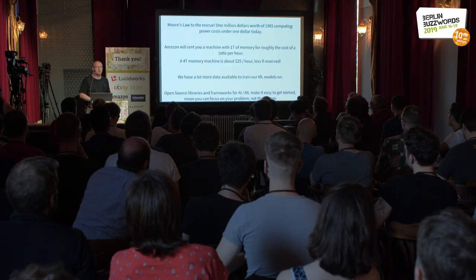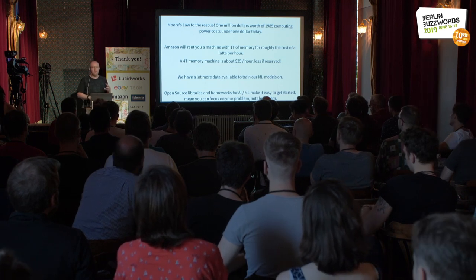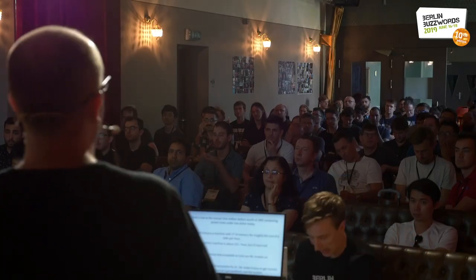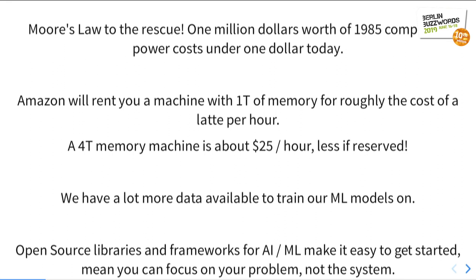You can rent a four-terabyte memory machine for 25 bucks an hour, so a whole bunch of problems that used to need more computers than would fit in this room are now 25 bucks an hour. We've also got a lot more data available to train our models on — we've now got terabytes and petabytes of records. And the other big thing is all the open source libraries and frameworks. You used to have to hire a computer scientist to write your AI library. It's just three lines of Python now, five lines of Java. There are libraries that let you focus on the data and the model, not on how to build one of these things.